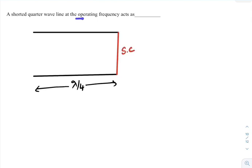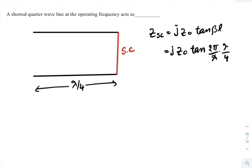Given that the quarter wave line is operated at operating frequency, the short circuit impedance ZSC equals j times Z0 tan beta L, that equals j times Z0 tan beta, which is 2 pi by lambda multiplied with length of the transmission line lambda by 4. That equals j times Z0 tan pi by 2, and the value of tan pi by 2 is infinity. Therefore, ZSC equals infinity, which represents an open circuit connection.